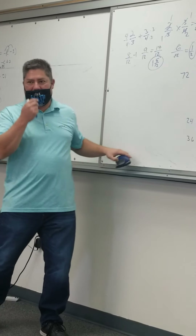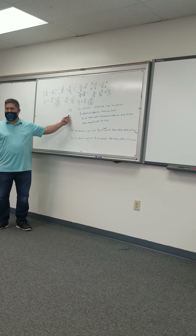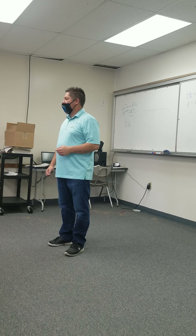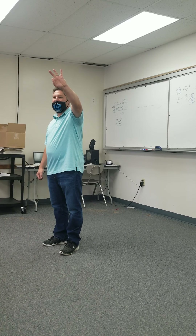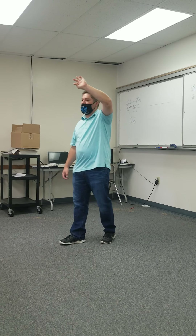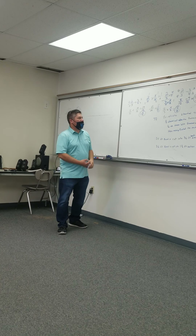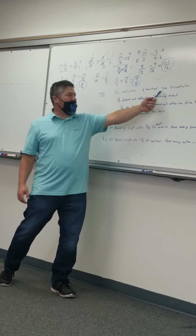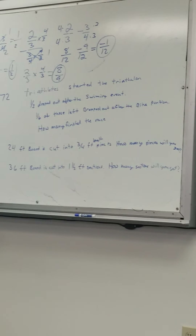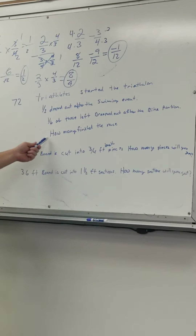Now let's do a couple real-world ones. We've got these triathletes — 72 start the race. Do you guys know what a triathlon is? It's multiple events — swimming, biking, and running, usually in that order. So we have 72 triathletes start the race. A third drop out after swimming — they're just like, I'm tired, I'm done. Then we have one-sixth of those left drop out after the bike portion. How many actually finished the race? That's the question.